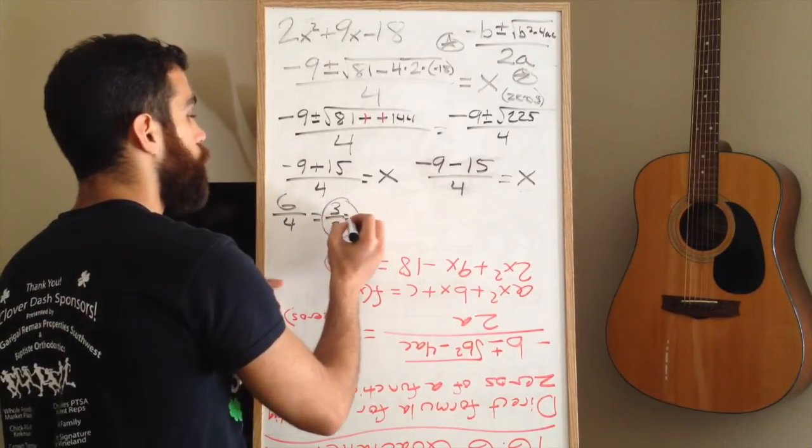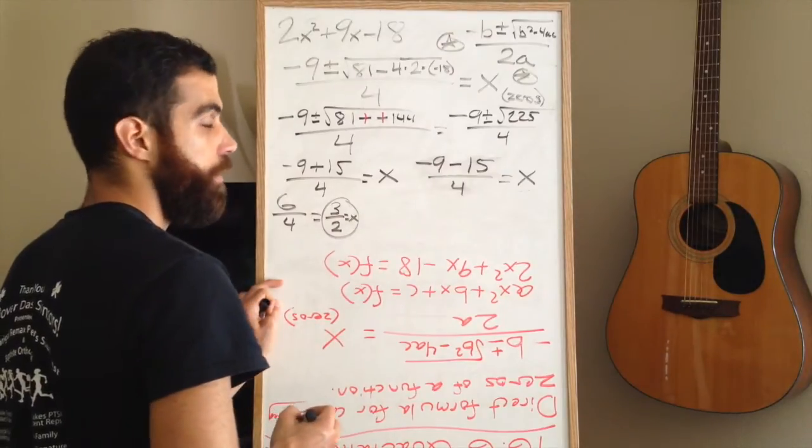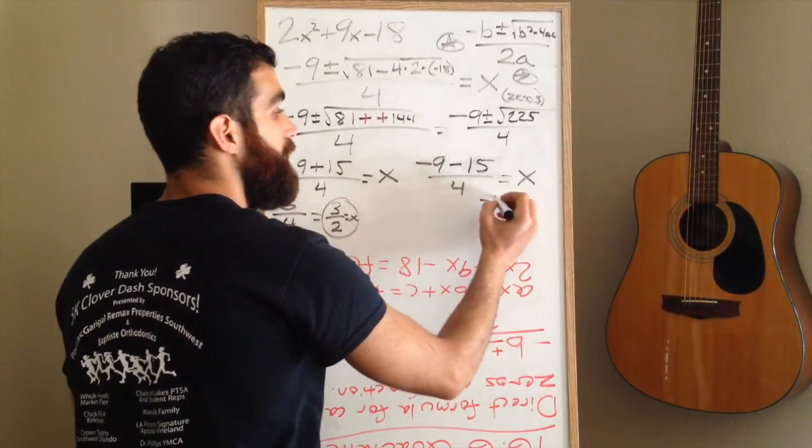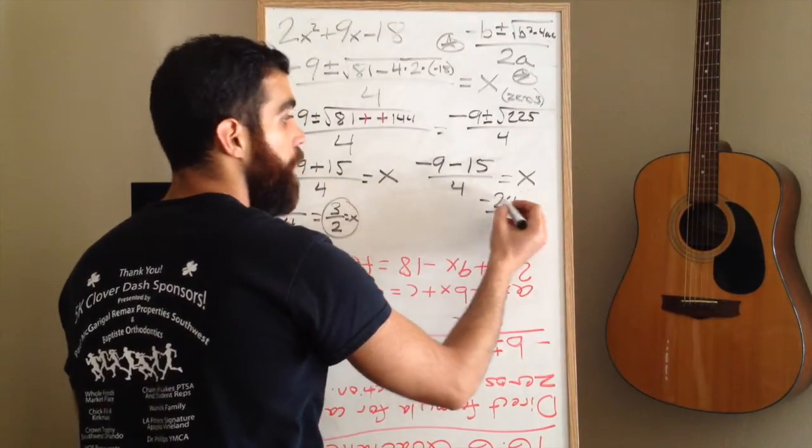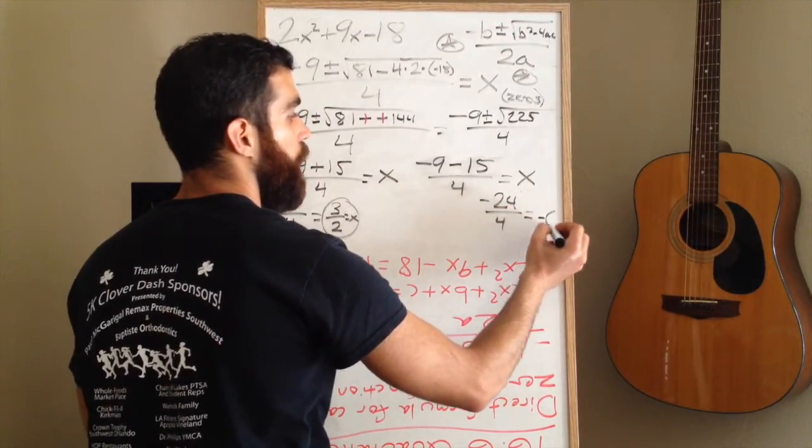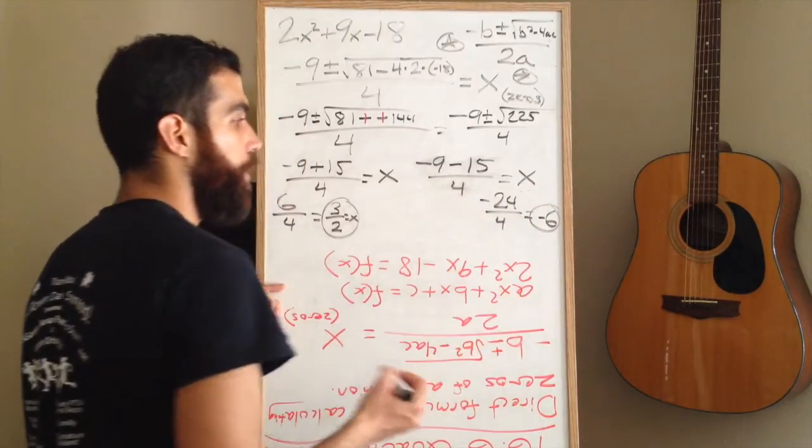Negative 9 minus 15 is negative 24. And all of that goes over 4. Negative 24 divided by 4 is negative 6. That is your other x value.